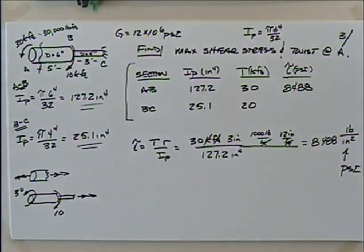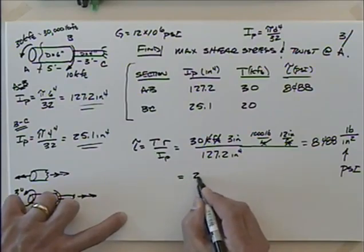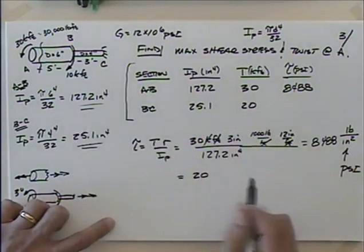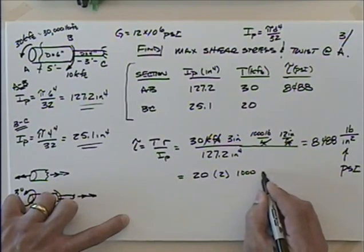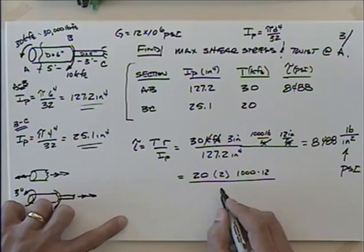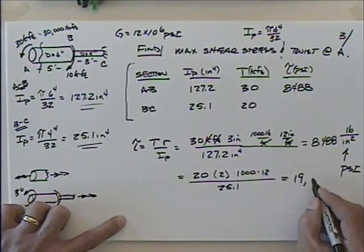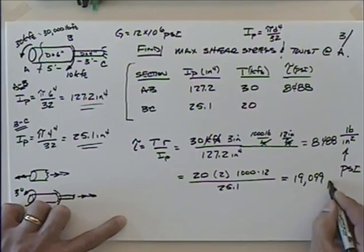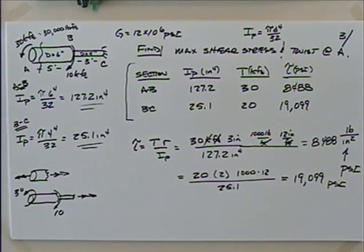For section BC: the torque is 20 kip-feet, but the radius is only 2 inches. However, the polar moment of inertia is much smaller at 25.1 — not 127. When you run through the calculation you get 19,099 psi. So the largest stress is definitely in the BC section, even though it carries less torque.